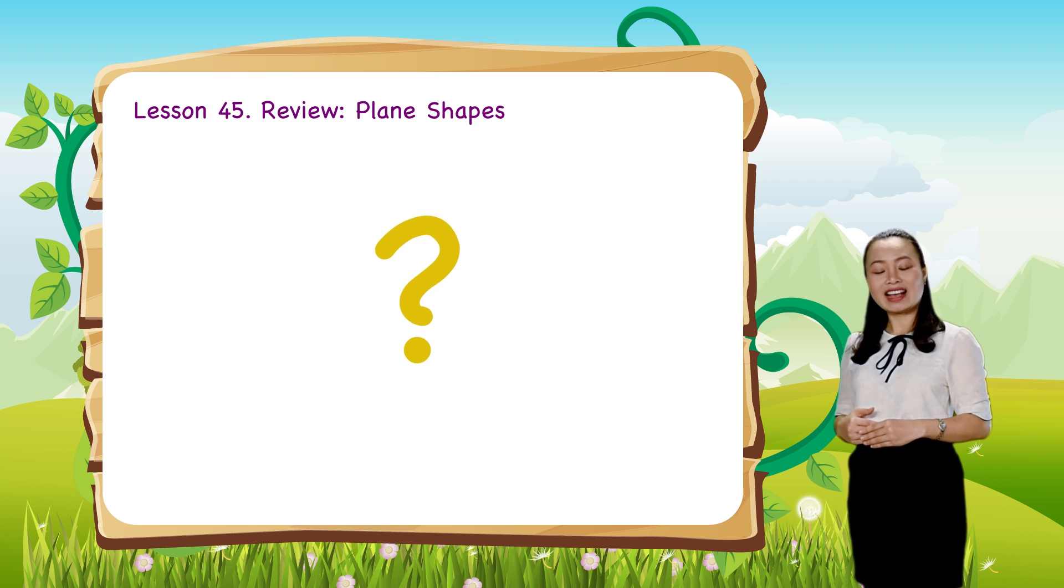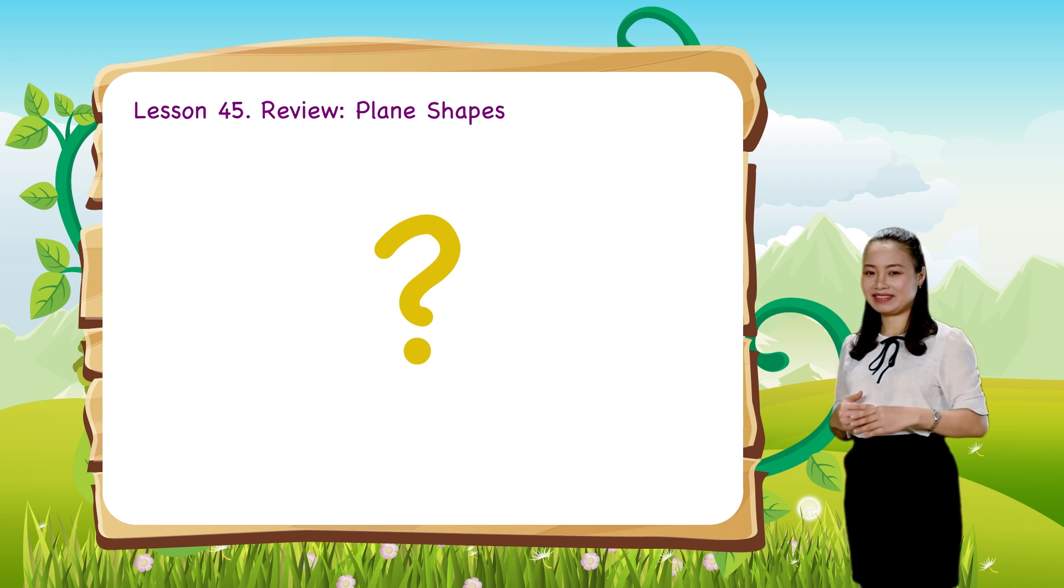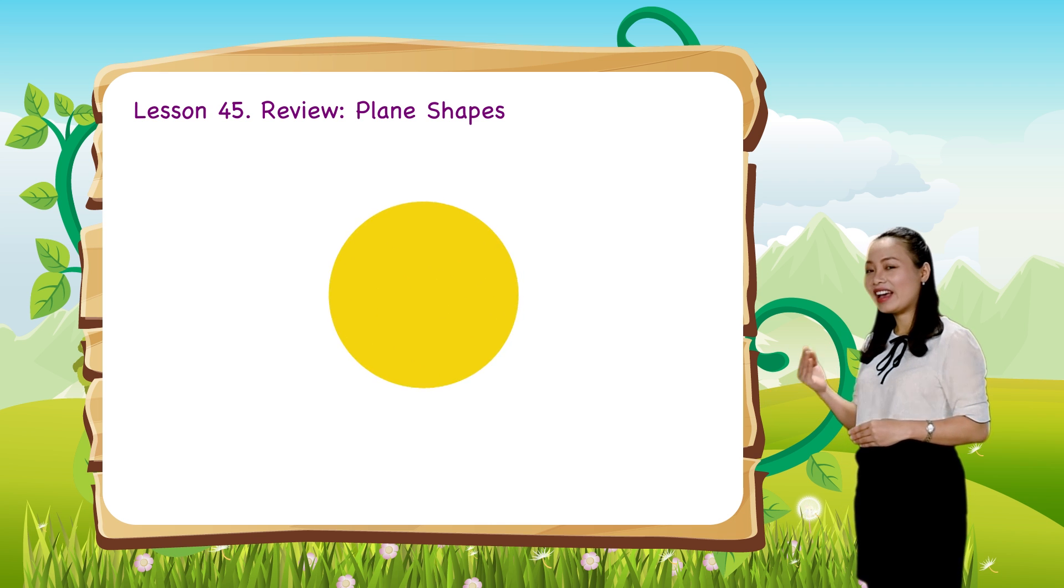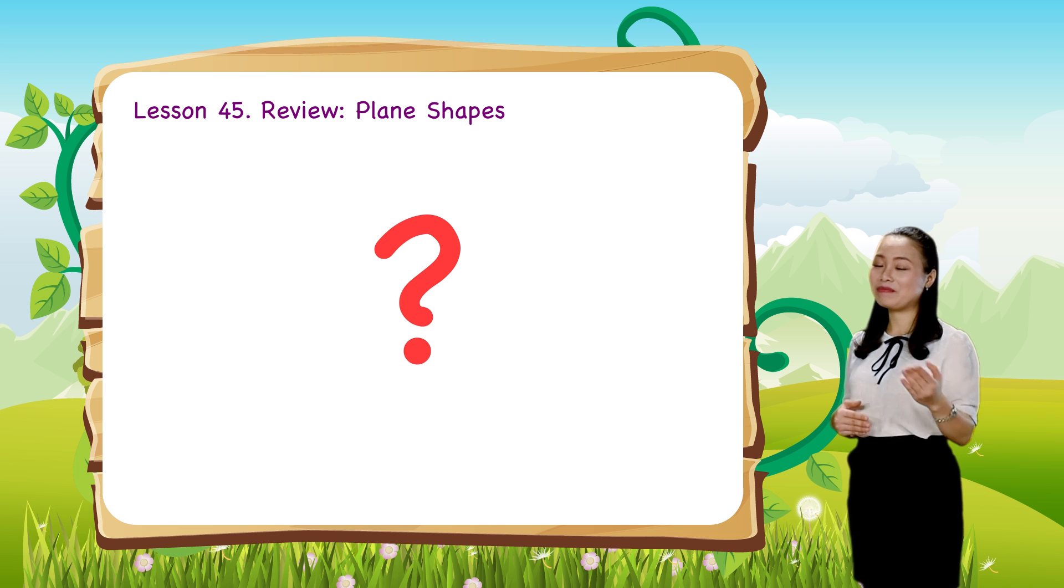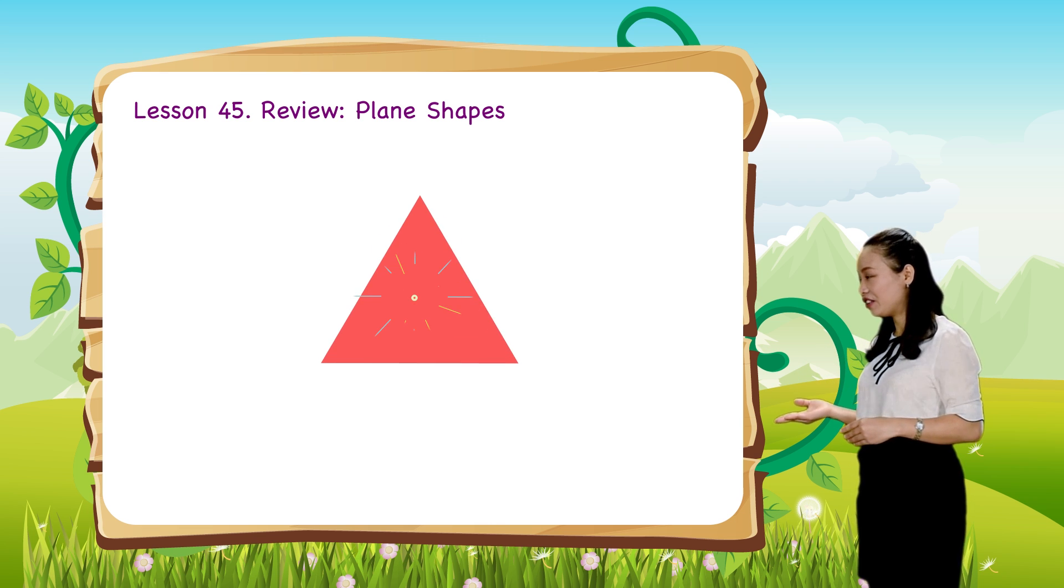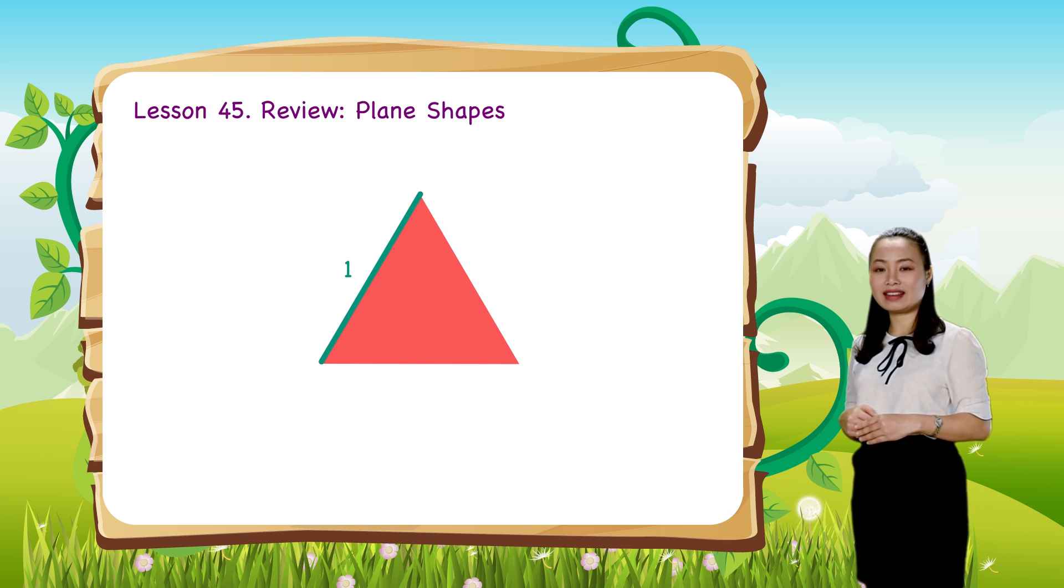What shape has no side? So, the circle has no side. What shape has three sides? So, the triangle has three sides.